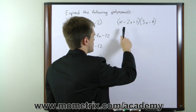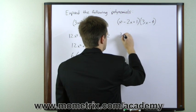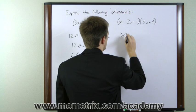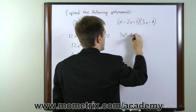So the first in order is going to be x squared times 3x. That gives us 3x cubed. x squared times negative 4 gives us negative 4x squared.